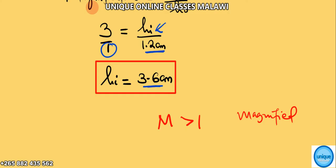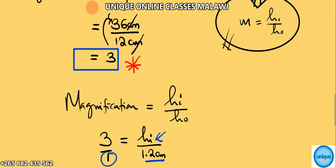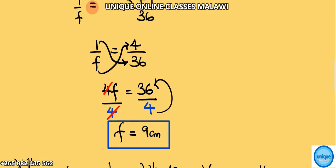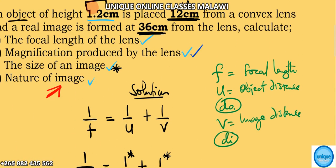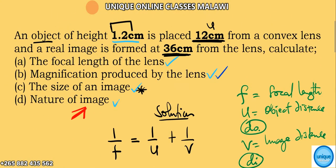The image is magnified as you can see—the height of the object is 1.2 and the height of the image is 3.6. According to the question, a real image is formed. When an image is formed on the screen, it's a real image.